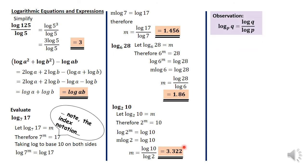Having said that, I have an important point to make. We should have observed that whenever we are given log of q to base p, that expression is the same as log q divided by log p. This is exemplified by the three questions we've tackled: log base 7 of 17 equals log 17 divided by log 7; log base 6 of 28 equals log 28 divided by log 6; and log base 2 of 10 equals log 10 divided by log 2. This observation is very, very vital — we could just always move straight to this result.